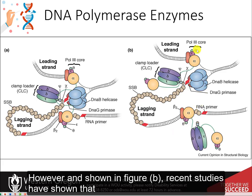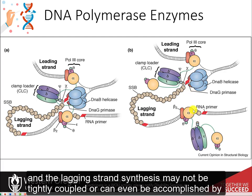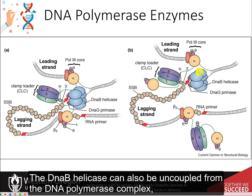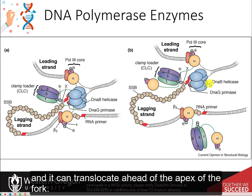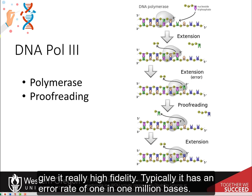However, as shown in figure B, recent studies have shown that E. coli DNA polymerase 3 is readily exchangeable at the fork, and the leading strand and the lagging strand synthesis may not be tightly coupled, or can even be accomplished by different DNA polymerase 3 enzymes altogether. The DnaB helicase can also be uncoupled from the DNA polymerase complex and can translocate ahead of the apex of the fork. DNA polymerase 3 has both DNA polymerase and proofreading capabilities, which give it very high fidelity.